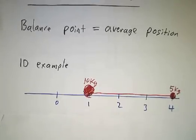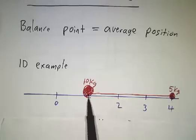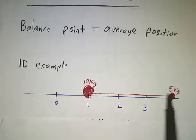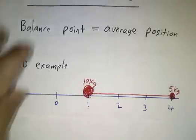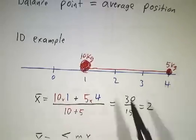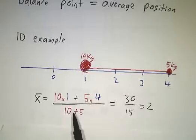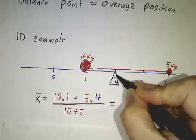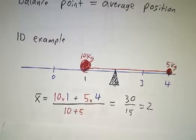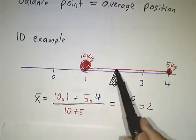Let's look at a one-dimensional example. Suppose you have a one-dimensional rod that's three meters long, with a 10-kilogram weight at the one-meter point and a five-kilogram weight at the four-meter point. Where does it balance? You just take an average: 10 times 1 plus 5 times 4 is 30, divided by the total weight of 15, which gives 2. So if you put in a fulcrum at point 2, it balances perfectly. There are 10 kilograms to the left, but the 5 to the right is two steps away while the 10 to the left is only one step away. This is the center of mass.